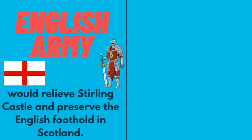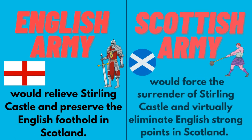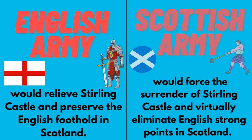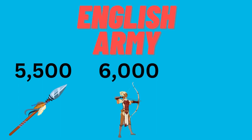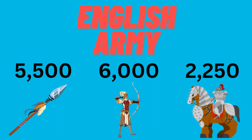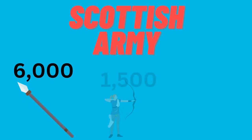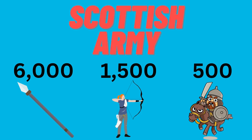The stakes are high for this battle. An English victory would relieve Stirling Castle and preserve the English foothold in Scotland. A Scottish victory would force the surrender of Stirling Castle and virtually eliminate English strongpoints in Scotland. The English have 5,500 spearmen, 6,000 longbowmen, and 2,250 heavy cavalry, clearly outnumbering the Scots, who have only 6,000 pikemen, 1,500 longbowmen, and 500 light cavalry.